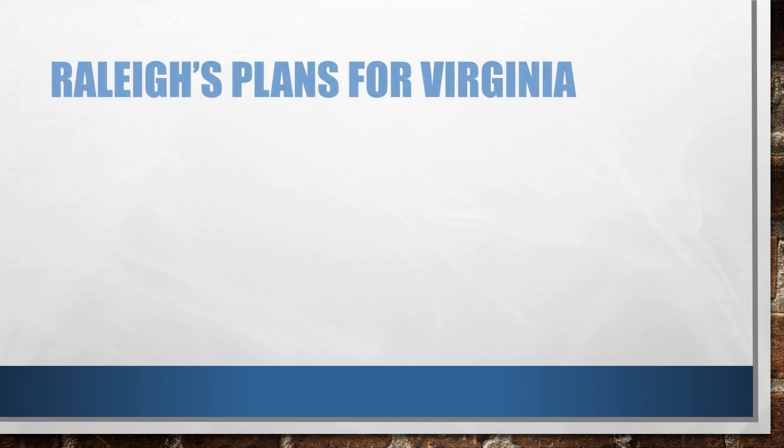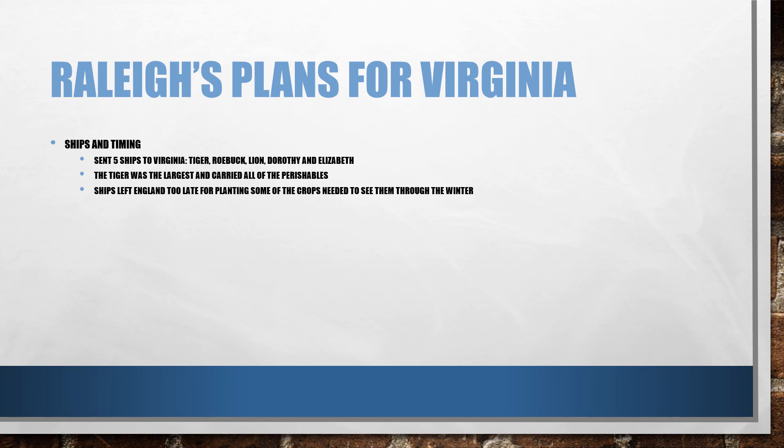Raleigh's original plans involved sending five ships to Virginia: the Tiger, the Roebuck, the Lion, the Dorothy, and the Elizabeth, with the Tiger being the largest. All perishable goods were placed on the Tiger. This came up as a stimulus bullet point in the 2019 exam paper, so it's important level-four knowledge. The ships left England too late in the year to plant seeds stored on the Tiger, meaning there wouldn't have been enough time for crops to grow to feed the colonists through the winter.